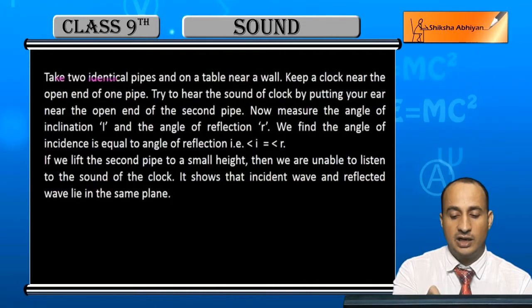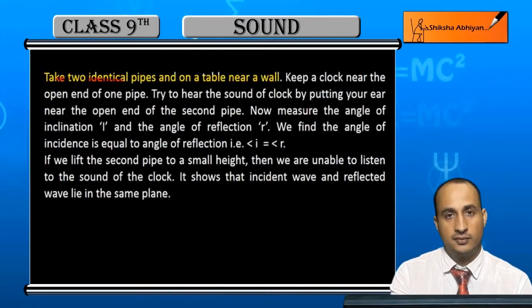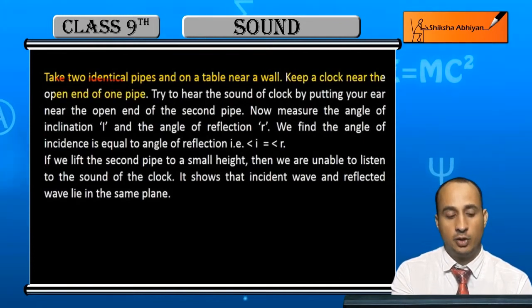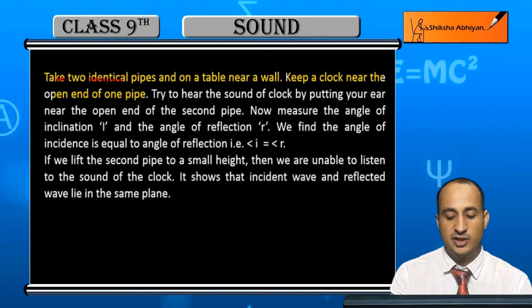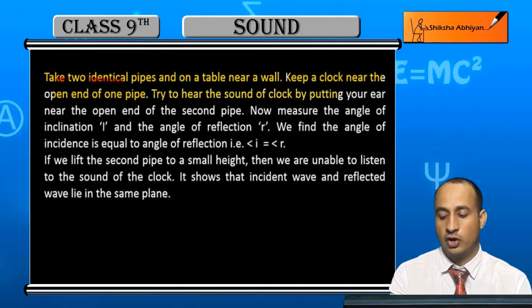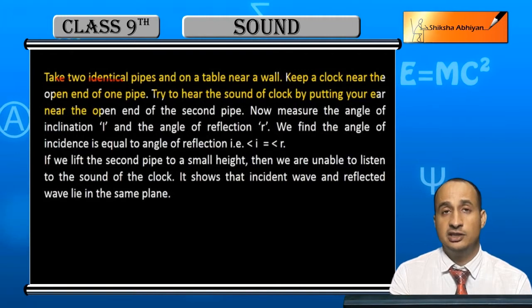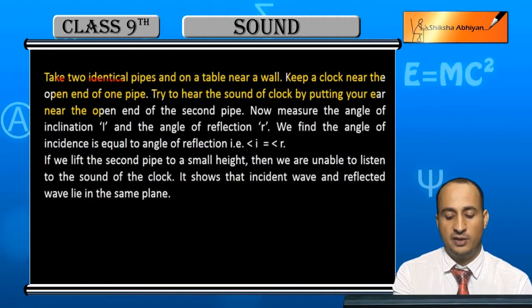Take two identical pipes on a table near a wall. Keep the clock near one open end of pipe. Try to hear the sound of clock by putting your ear near the open end of the second pipe. Now you have to find the angle of inclination and reflection.